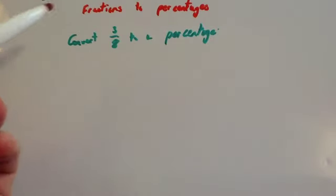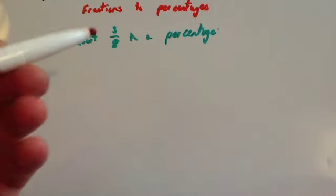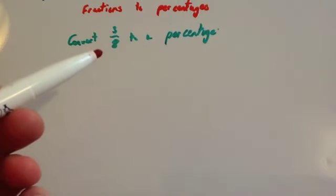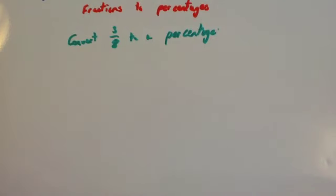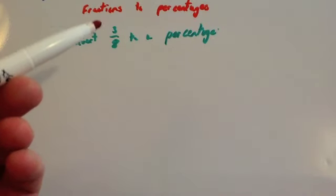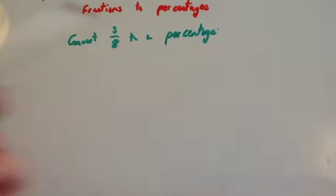In our last example, we're going to convert 3/8 to a percentage. Now the first method will be quite difficult here because 8 isn't a factor of 100. It doesn't go into 100. So there's not one single number you can times top and bottom by to get it to become 100 or a single integer whole number. So what we're going to do is just use the second method.